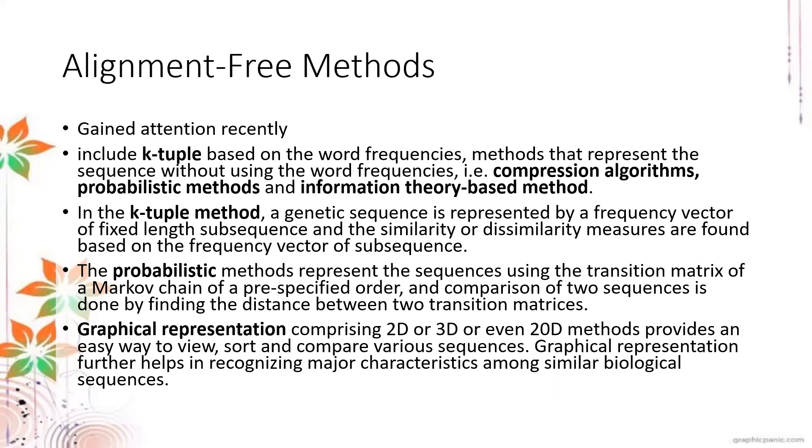In probabilistic methods, it represents sequences using the transition matrix of a Markov chain of a pre-specified order, and comparison is done by finding the distance between two transition matrices. Graphical representation comprises 2D or 3D or even 20-dimensional methods. It provides an easy way to view, sort, and compare various sequences. Graphical representation further helps in recognizing major characteristics among similar biological characteristics.